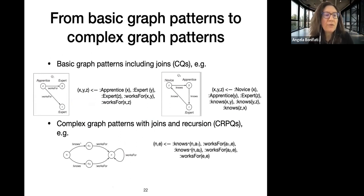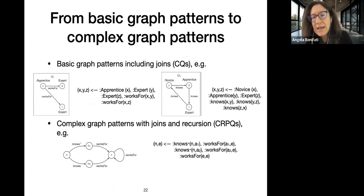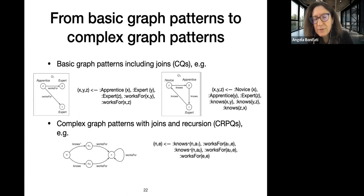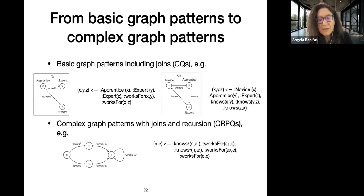Here are some example queries. For basic graph patterns, the first two examples use joins — essentially conjunctive queries. The first query looks for apprentices that work for two experts. The second is a triangle query looking for combinations of novice, apprentice, and expert who know each other. Below, complex graph patterns also use recursion — these are called CRPQs, conjunctive regular path queries.